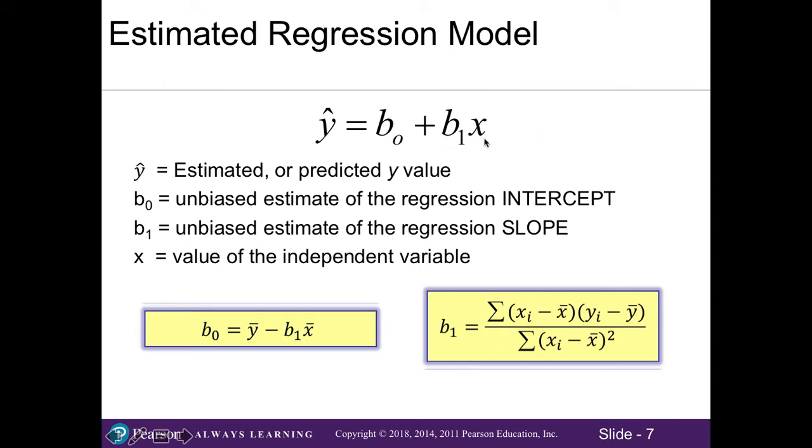And x is the value of the independent variable. Now while we have equations here to help us find the intercept and the slope, we'll be using Excel. The textbook shows examples of the manual calculations, which can be quite intensive.